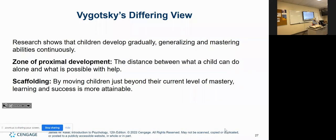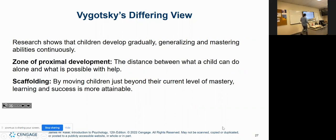So we left off last lecture where we talked about child development, specifically cognitive development. Jean Piaget was one of the fathers of child development. A couple other theorists were prominent, and one of the most notable was a guy named Lev Vygotsky.